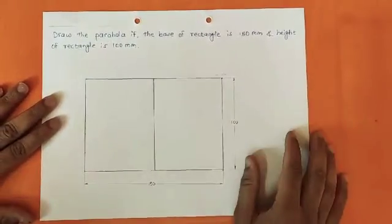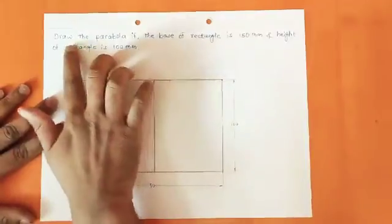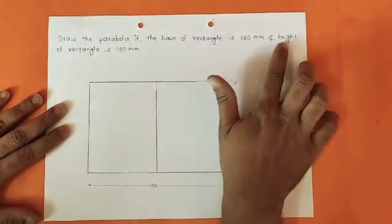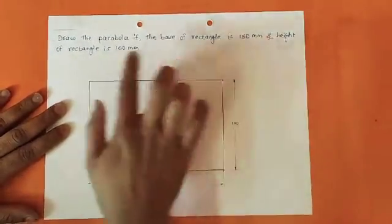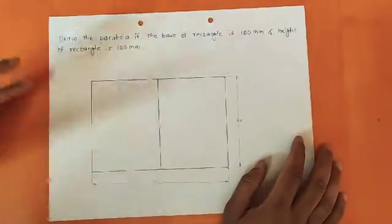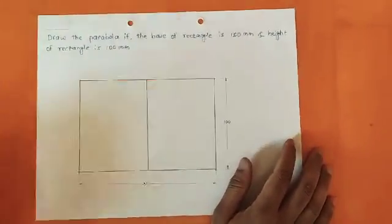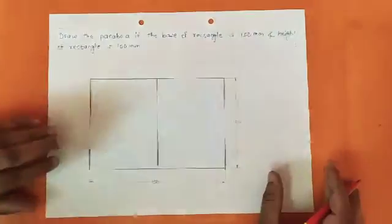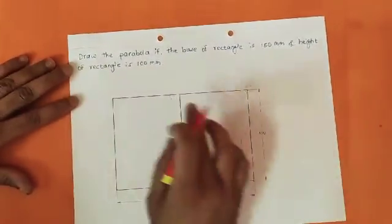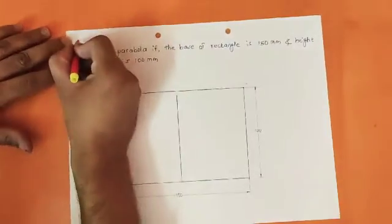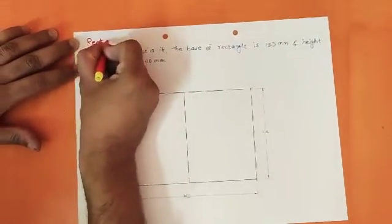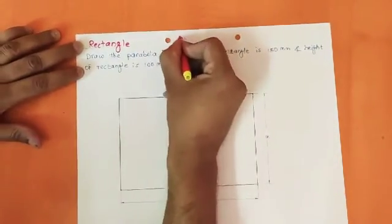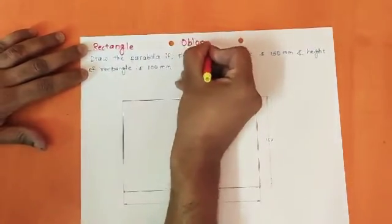We will directly go through the problem statement: draw the parabola if the base of the rectangle is 150 mm and the height of the rectangle is 100 mm. In the previous lecture we drew an ellipse with the rectangle method, and here again the base and height are given, so you are supposed to draw this parabola with the rectangle method, also called the oblong method.